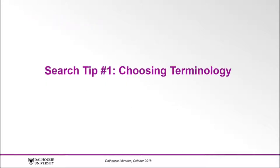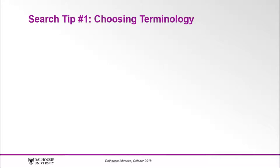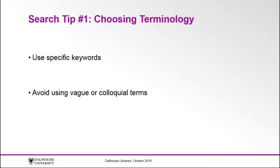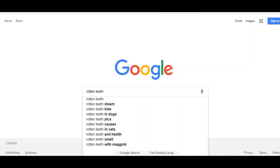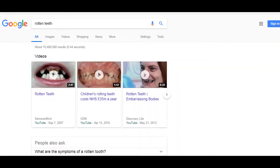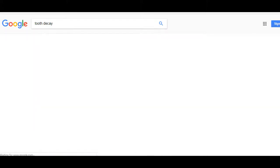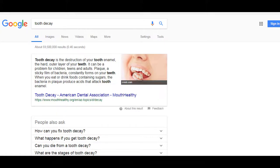Search tip number one: choosing terminology. The terms you choose for your Google search play a huge role in the precision of your results. You should use keywords that are most likely to appear in your results and be very careful to avoid vague terminology or colloquial terms, because they can impact the number and quality of your results. So instead of searching for 'rotten teeth,' try searching for 'tooth decay' to get a more useful set of results.